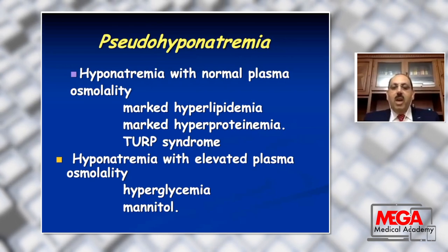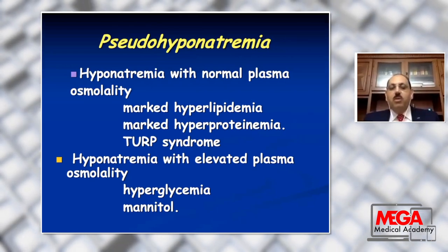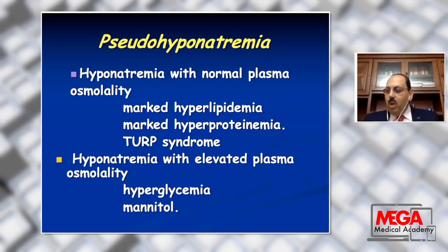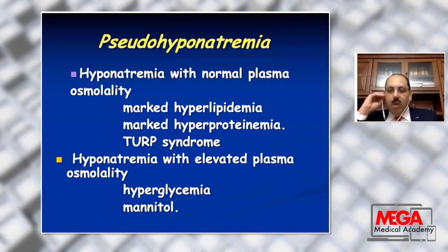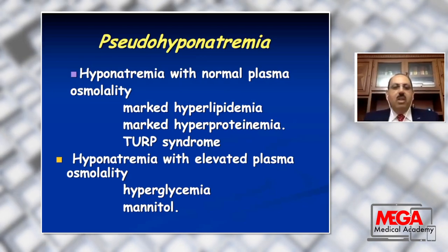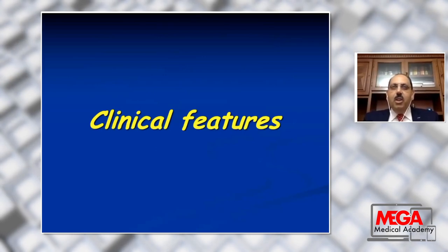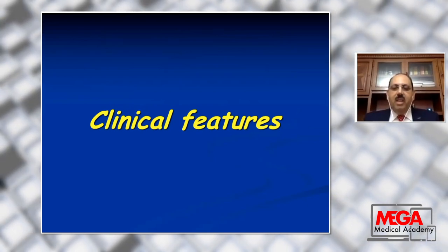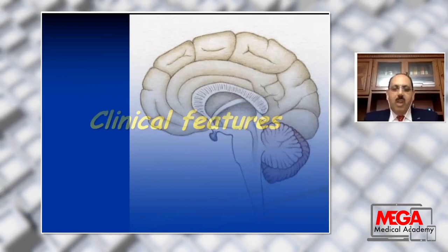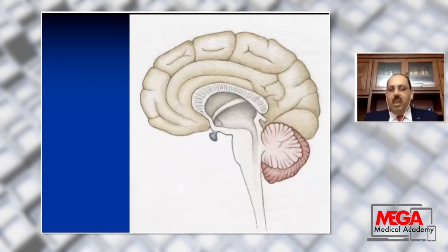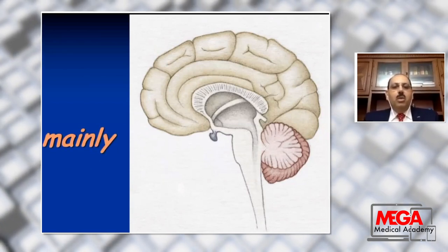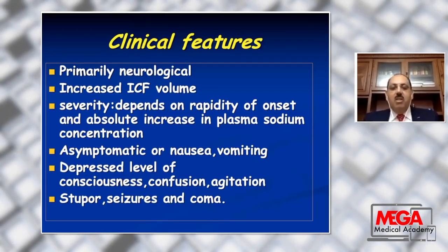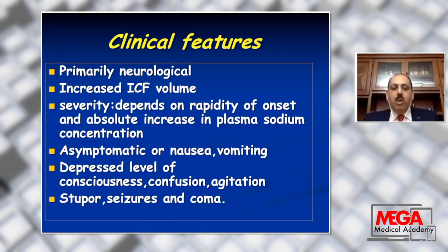Also, hyponatremia with elevated plasma osmolarity in case of uncontrolled diabetes mellitus and hyperglycemia, which produces increased osmotic effect. Also, mannitol dehydration by mannitol will cause water to drain into the intravascular volume. The clinical features usually include increased intracellular volume and cellular edema, so think about the brain. The neurological manifestation is the mainstay in hyponatremia — either the patient is asymptomatic or starting with nausea, vomiting, depressed level of consciousness, confusion, agitation, stupor, seizures, and coma.